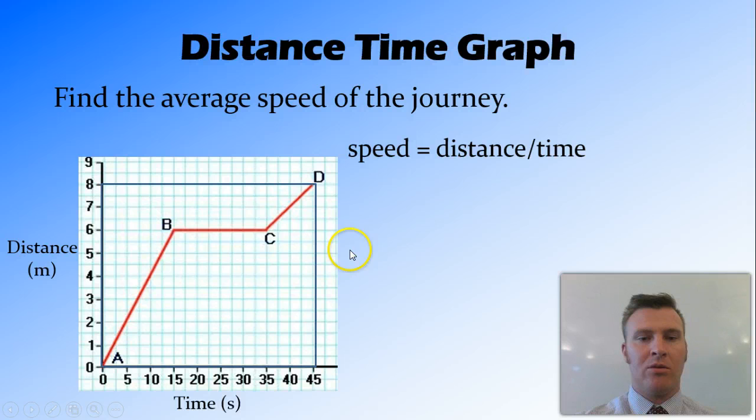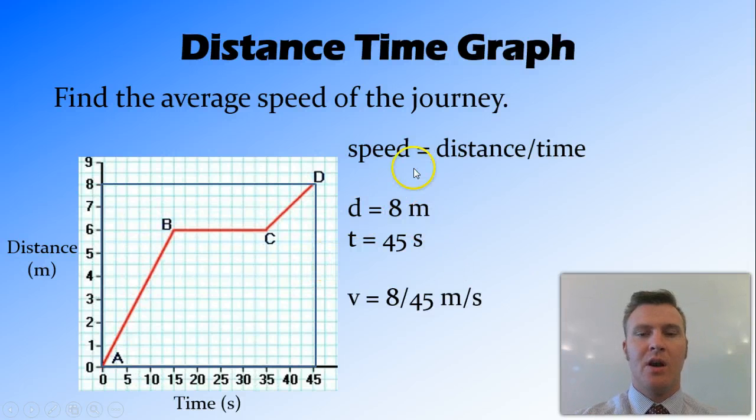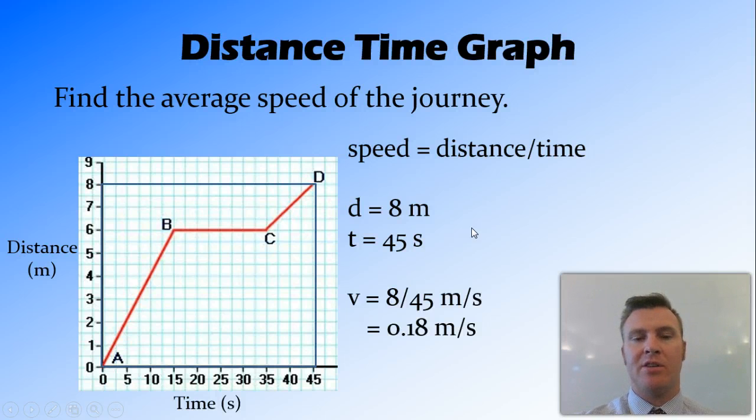So if I looked at the final distance, which is 8 metres, and the final time, which is 45 metres, distance divided by time, 8 divided by 45 gives me 0.18 metres per second. So that's the average speed of the journey.